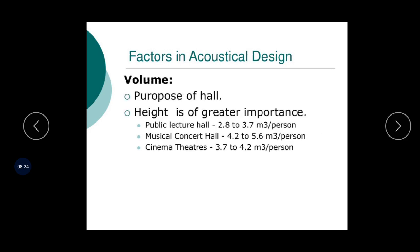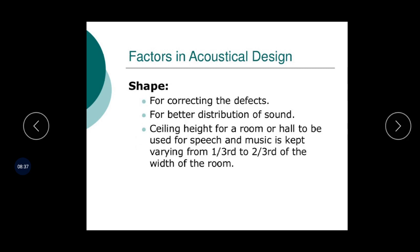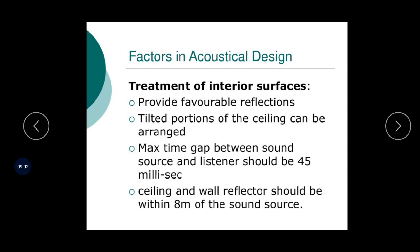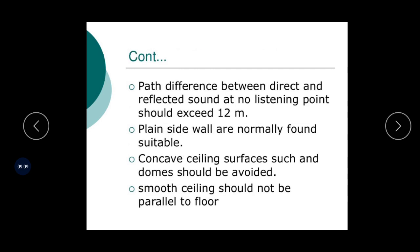This is the volume that I have already discussed: public lecture hall — volume 2.8 to 3.7 meter cube per person; musical concert hall — 4.2 to 5.6; cinema theatre — 3.7 to 4.2. This is about the shape — the important one is ceiling height. For a room or hall to be used for speech and music, it is kept varying from one-third to two-thirds. Next, this table covers the relationship between ratio and volume per seat. This covers factors in acoustical design like treatment of interior surfaces.